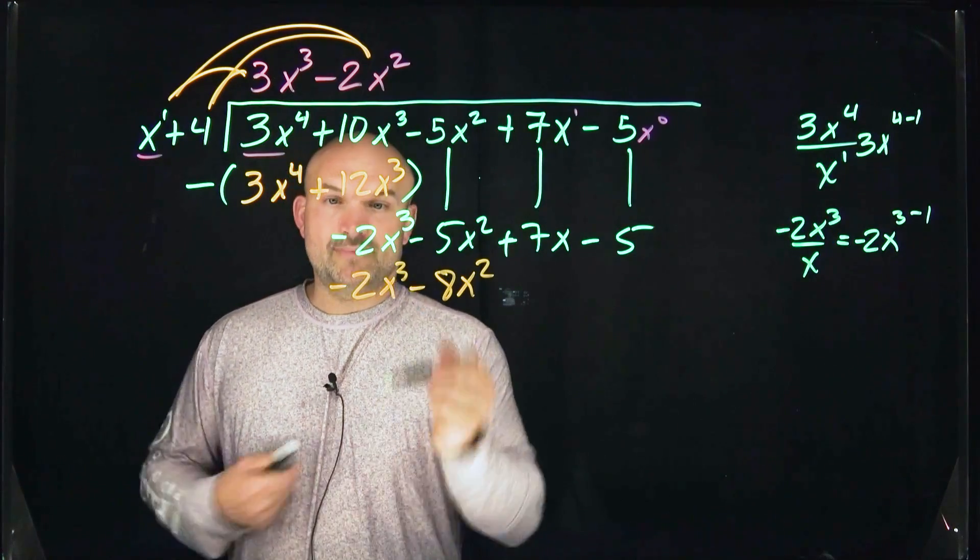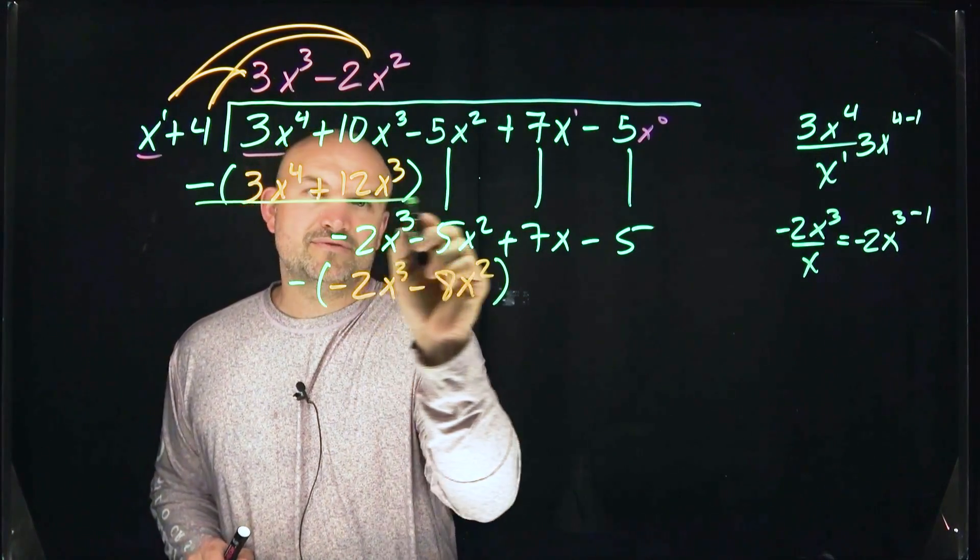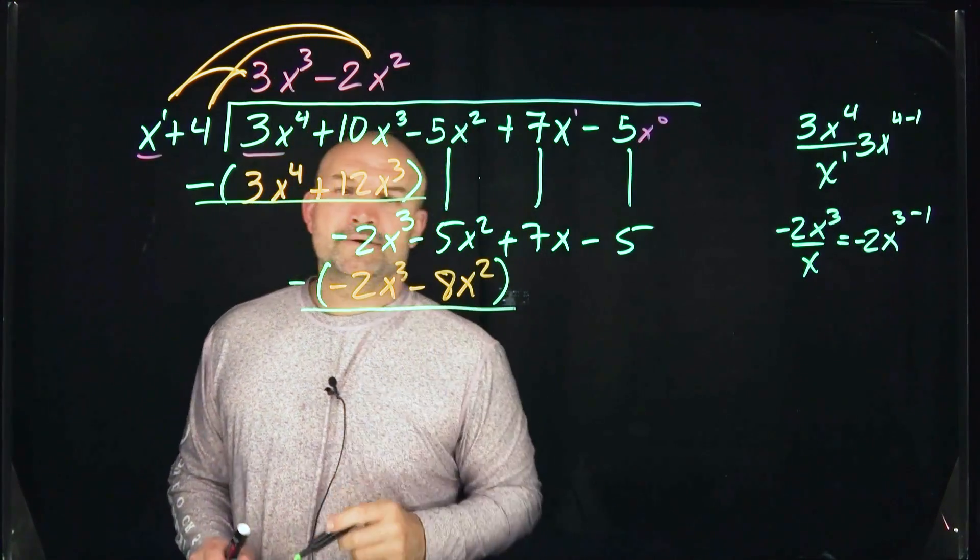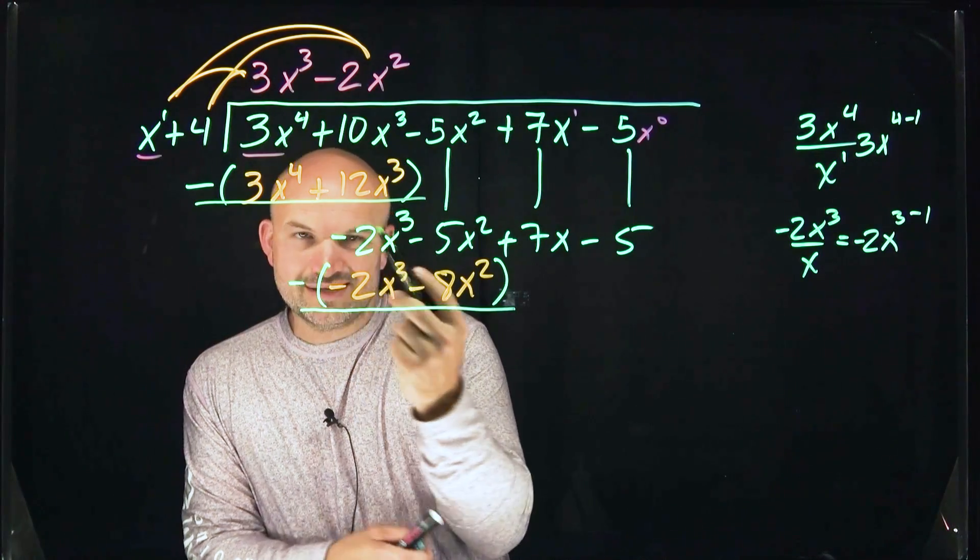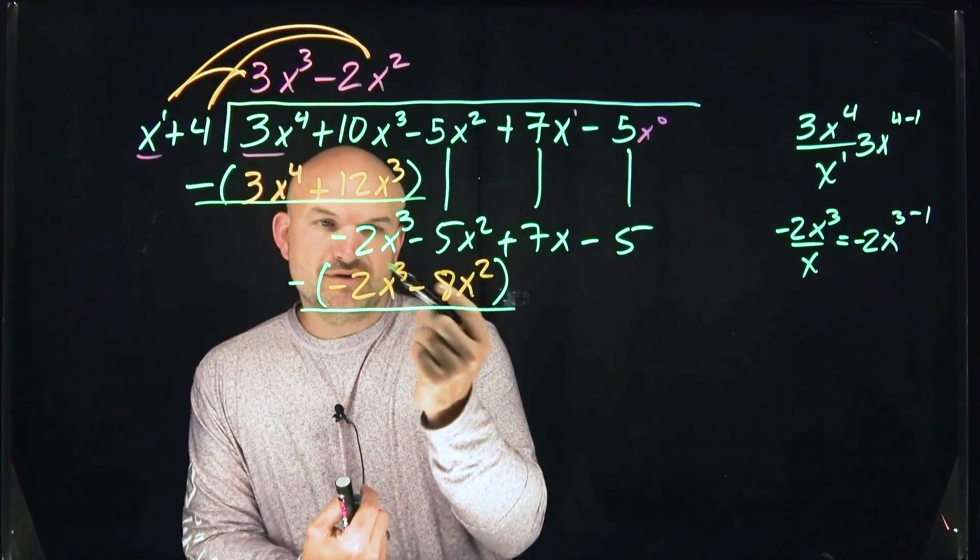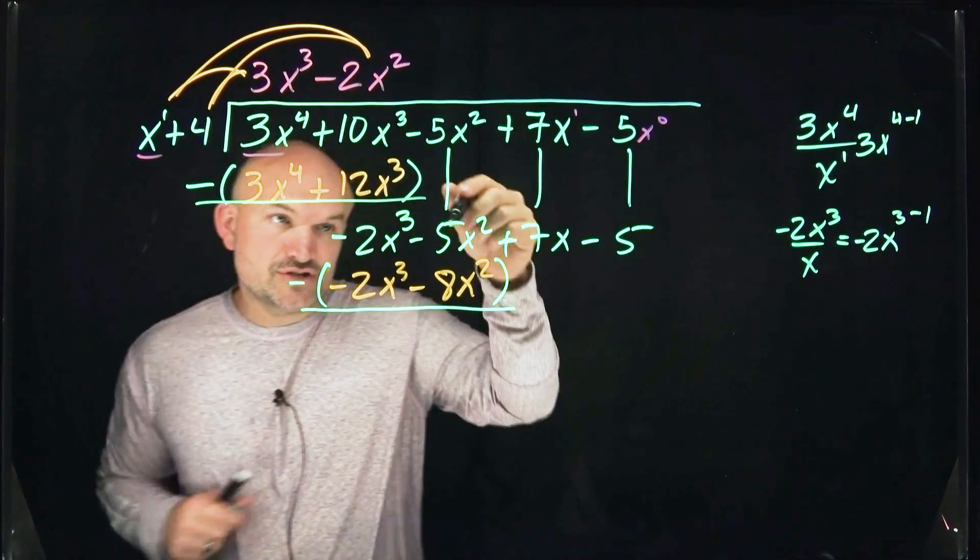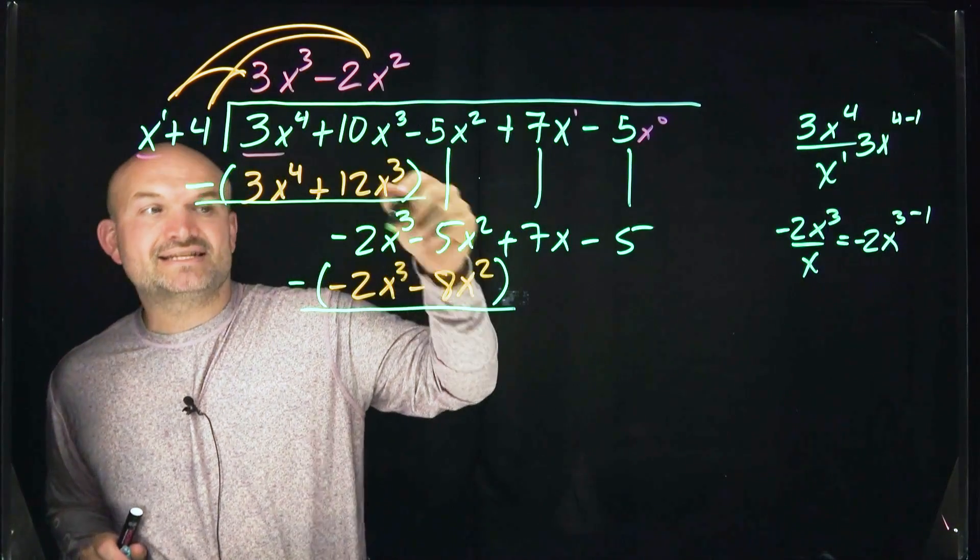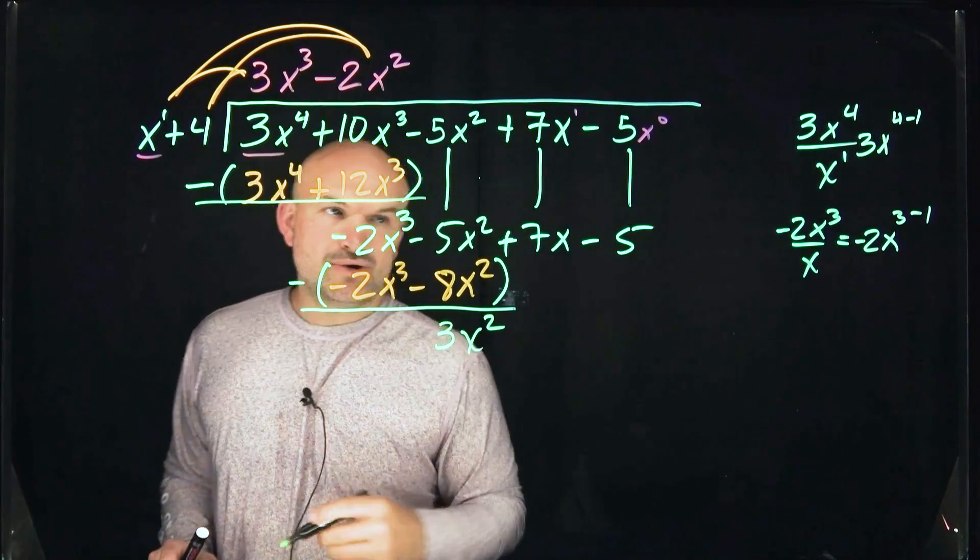So now I can go ahead and put my parentheses on the round and subtract. We're going to subtract them vertically. Since these are exactly the same, negative 2x cubed minus a negative that turns to a positive, it's going to give you 0x cubed. Remember that double negative makes a positive. So negative 5x squared minus a negative 8x squared is now going to give me a positive 3x squared.